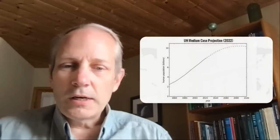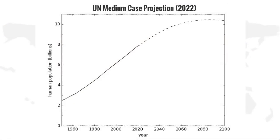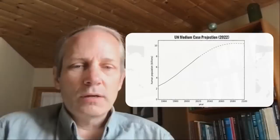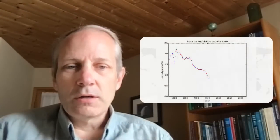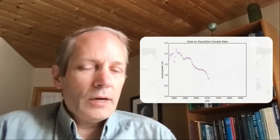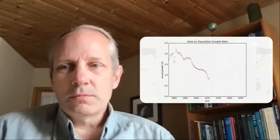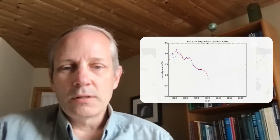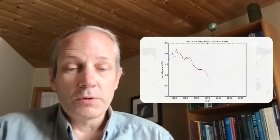So the United Nations periodically puts out projections. This is from 2022, where their standard run has us peaking around 2086 at 10.4 billion. They have a few variants around that, but nothing extremely different. They're all basically the same thing. So I just assumed that that was reasonable. I didn't question that. It seemed like the trajectory we were on.